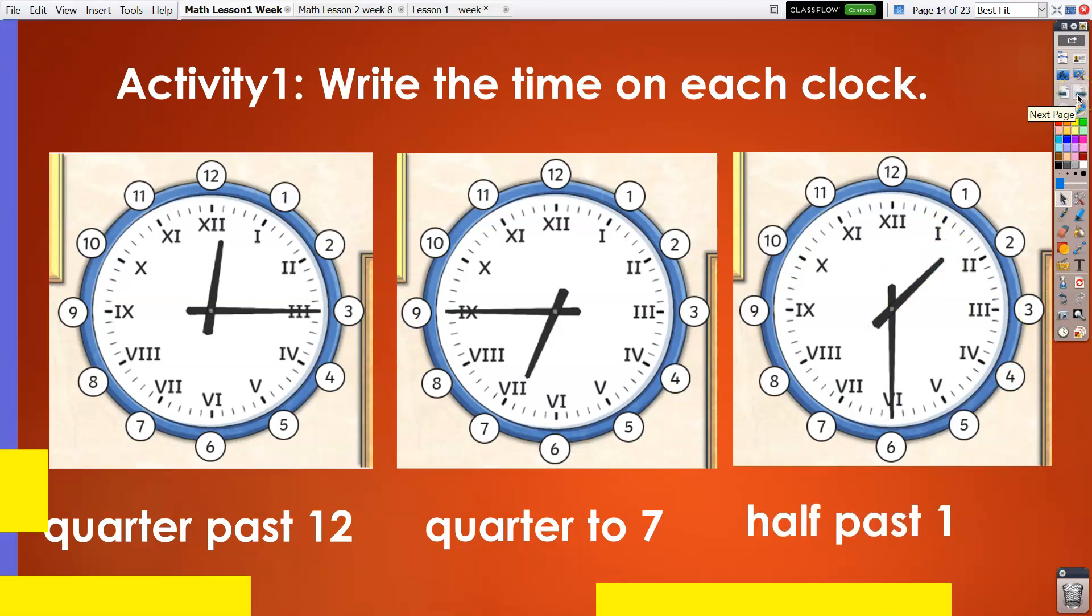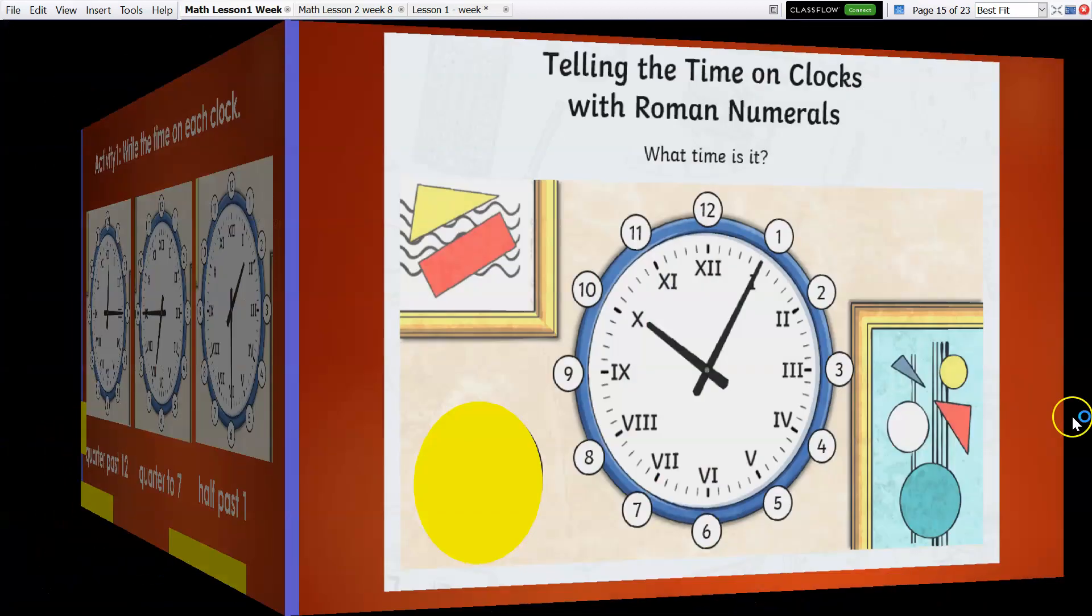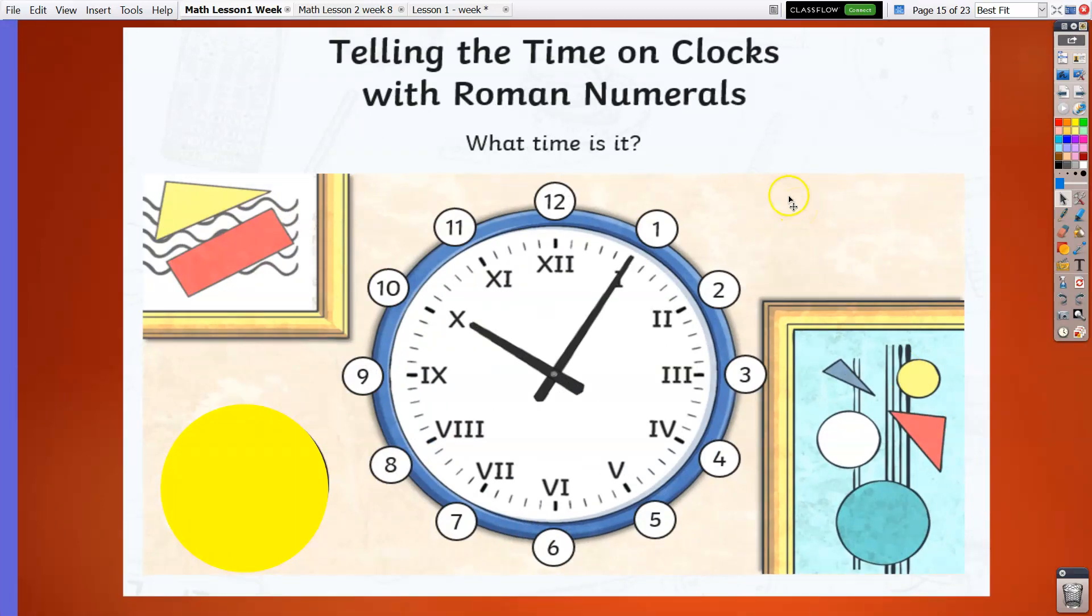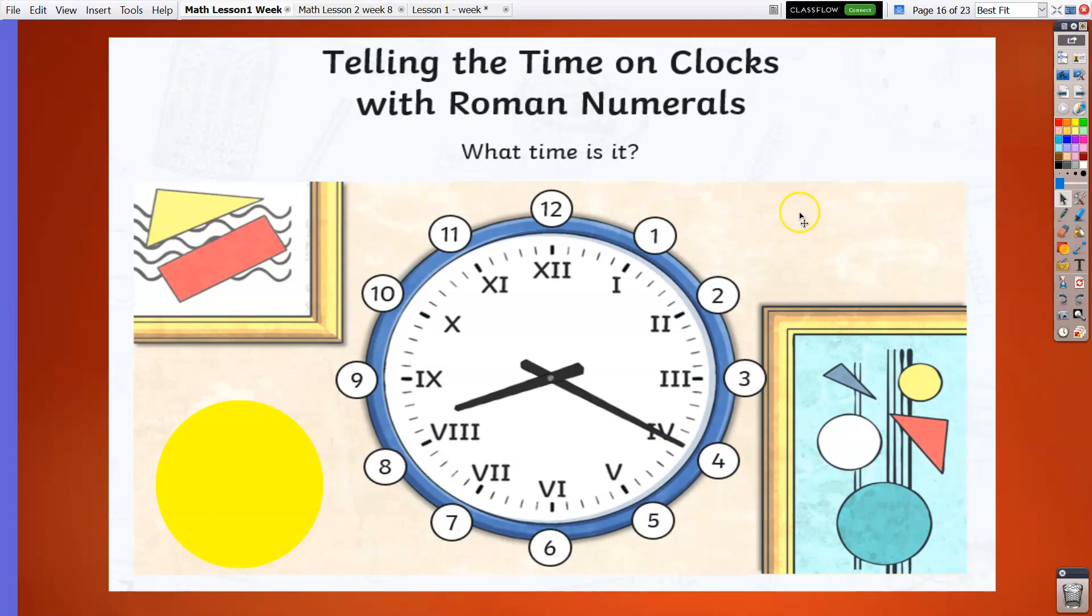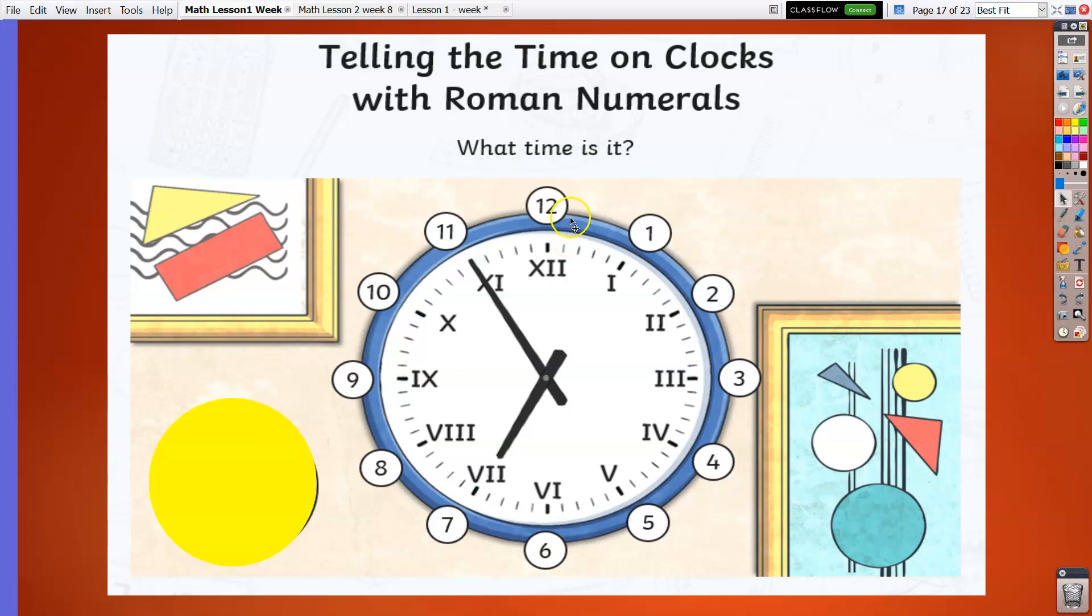I hope you get the correct answers. Now let's have three more clocks. What time is it? We have five past ten. Great job. What time is it now? We have 20 minutes past eight. And finally, we have to the hour hand, so five minutes to the next hour is seven. So it's five to seven.